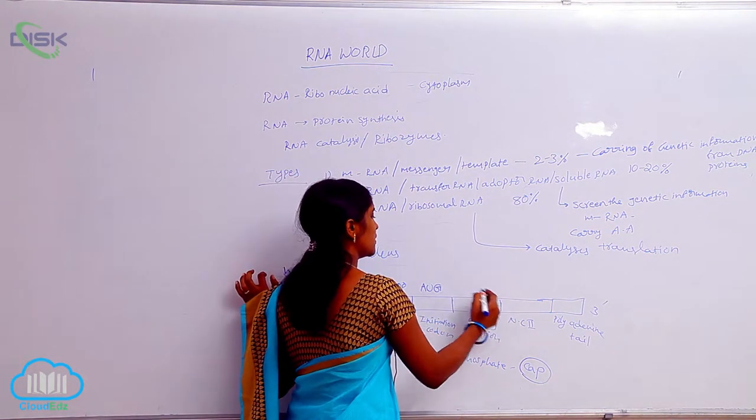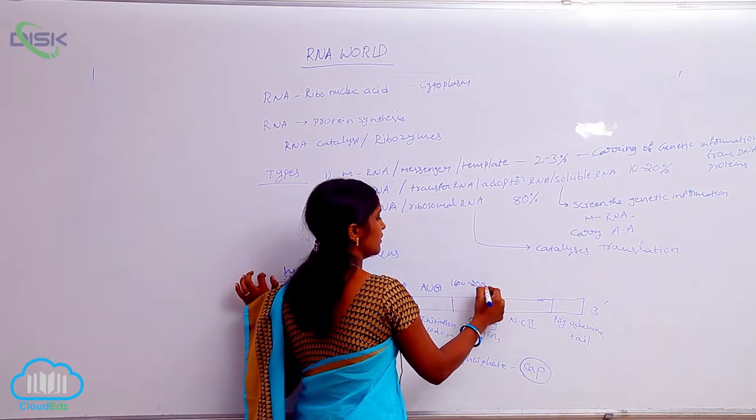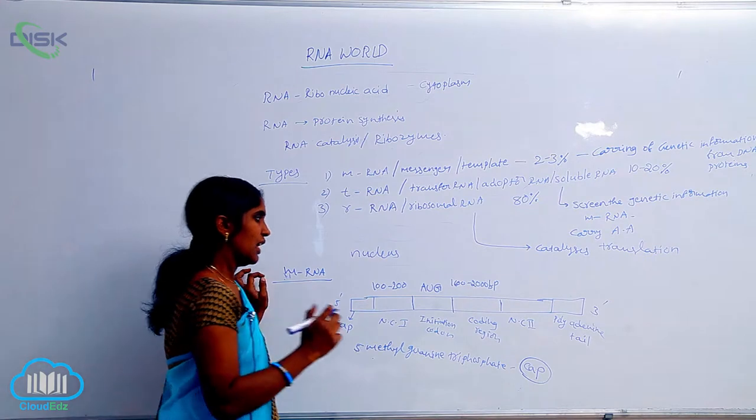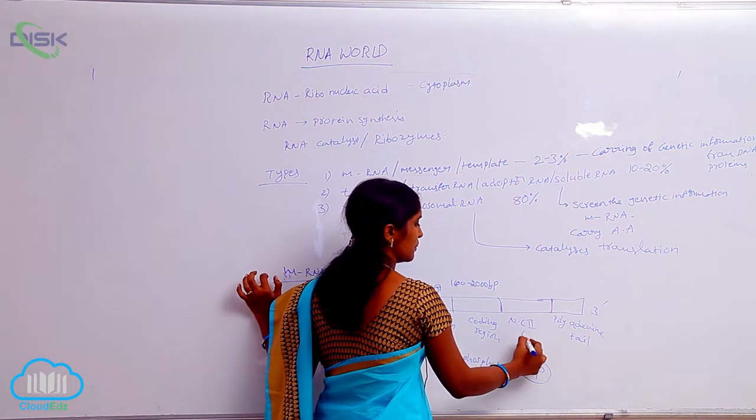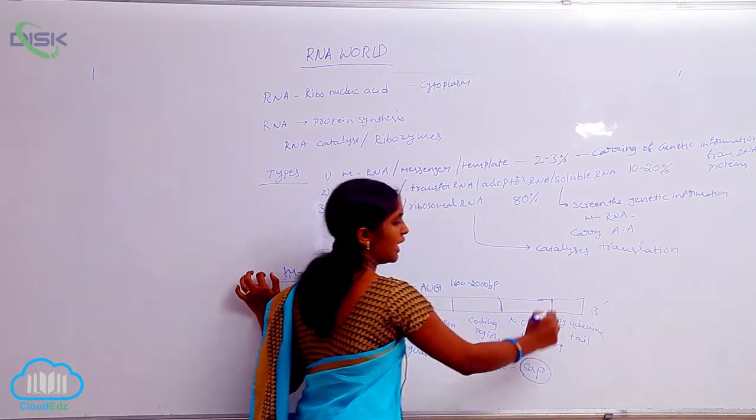Coding region is approximately 1600 to 2000 base pairs in length. And here, the protein synthesis proceeds. Non-coding region 2 is also present, approximately 100 to 150 base pairs in length.